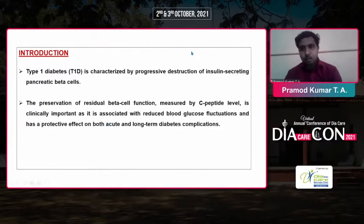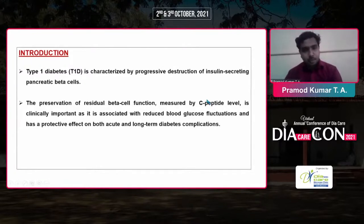Type 1 diabetes is characterized by progressive destruction of insulin-secreting pancreatic beta cells. The preservation of residual beta cell function, measured by the C-peptide level, is clinically important as it is associated with reduced blood glucose.